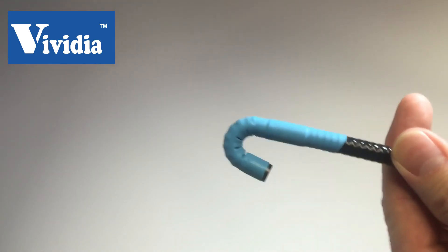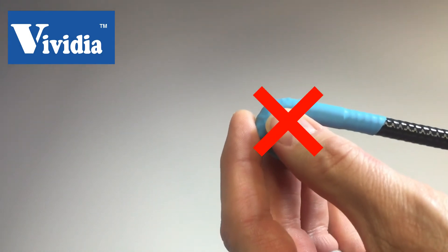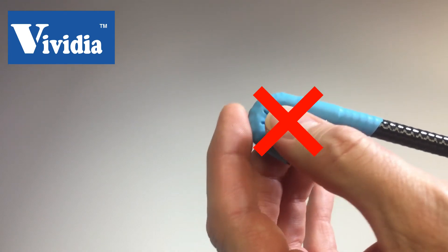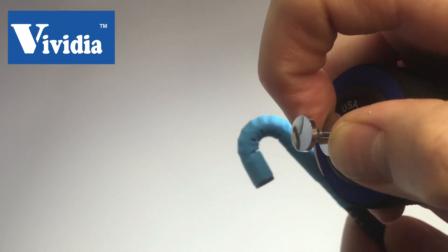try to unlock your scope by forcing it with your hands or fingers. This will definitely damage or break your scope. Always use your locking collar to release the locking.